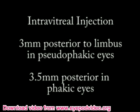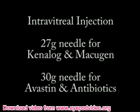We normally inject three millimeters posterior to the limbus in pseudophakic eyes and three and a half millimeters posteriorly in phakic eyes. We typically use 27 gauge needles for Kenalog and Macugen, and 30 gauge needles for Avastin and intravitreal antibiotics.